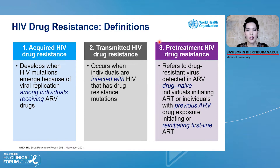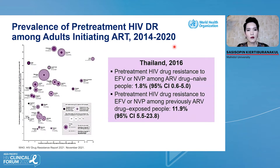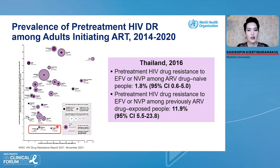Let me start with the third definition — pre-treatment HIV drug resistance. This figure and data show why WHO issued its HIV drug resistance report in 2021. This data shows prevalence of pre-treatment HIV drug resistance among adults initiating ART during 2014 to 2020. For example, in Thailand — this is data from 2016 — the dark purple represents pre-treatment HIV drug resistance to NNRTIs among naive people, and the light purple represents pre-treatment HIV drug resistance to NNRTIs among previous ARV-exposed people.